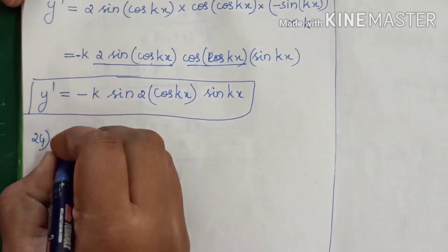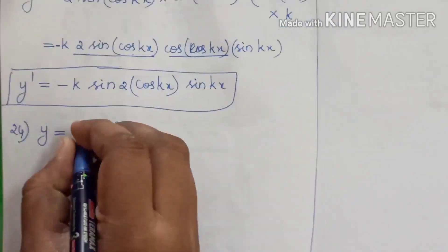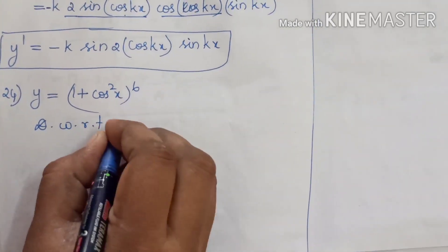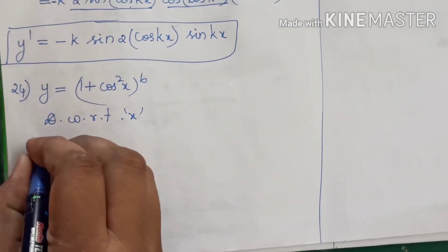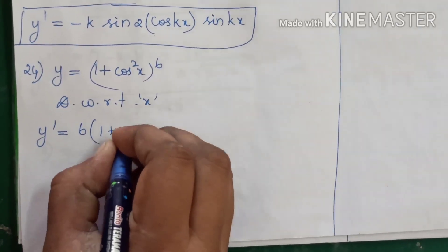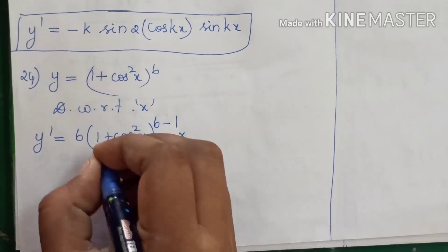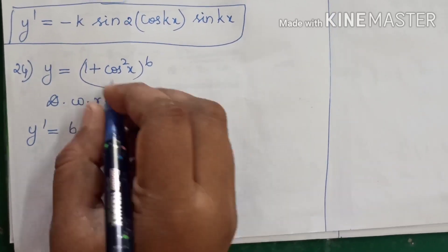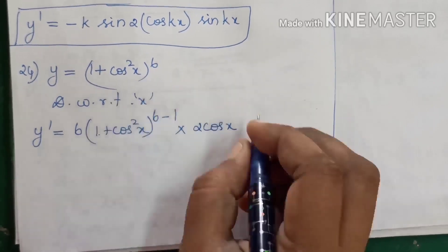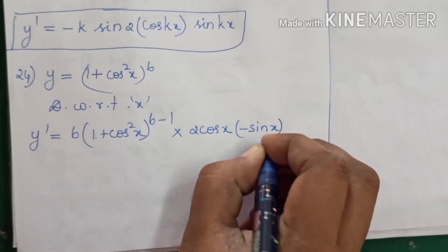Now for the 24th sum: y is equal to (1 + cos²x) to the whole power 6. Differentiating with respect to x: y dash equals 6 into (1 + cos²x) to the power 5, into the derivative of the inner function. Differentiating 1 gives 0; differentiating cos²x gives 2 cos x; differentiating cos x gives minus sin x.